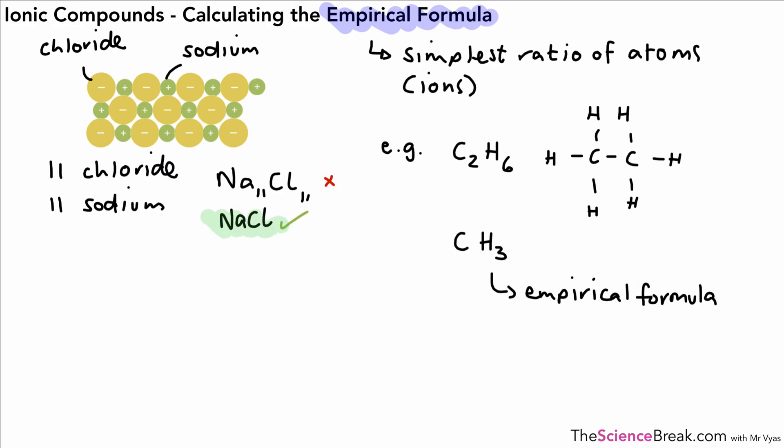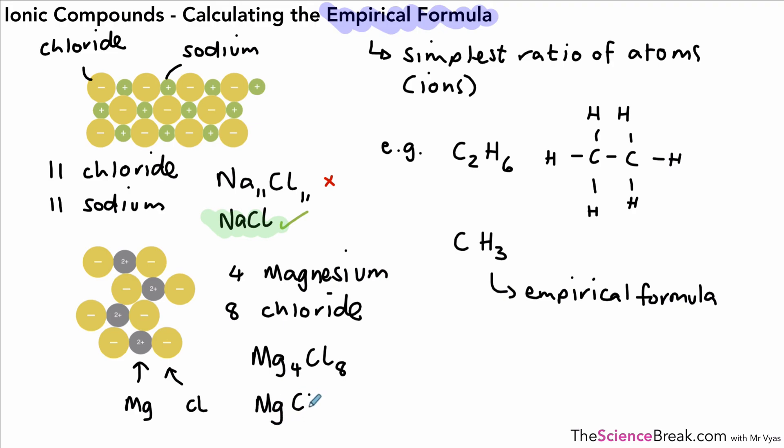What about this one here? Well, here we have magnesium ions and chloride ions again. But this time we've got four magnesium for every eight chloride ions. You might be tempted to write Mg4Cl8, but that's not the correct empirical formula. We could cancel that down, the four and the eight, and we'd have MgCl2, and this is the correct empirical formula for the ionic compound that is magnesium chloride.